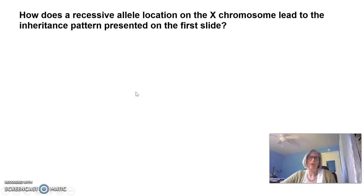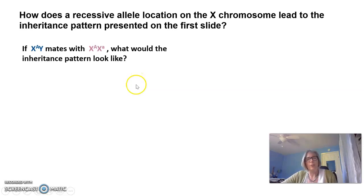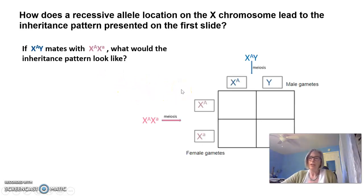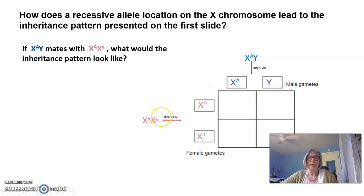How does a recessive allele located on the X chromosome lead to the inheritance pattern presented? Let's do an example. If an X uppercase A Y male mates with a heterozygous female, what would the inheritance pattern look like? Let's do a Punnett square. The male's X big A and Y go through meiosis — some sperm have the X with the dominant allele, some have the Y. The female produces eggs, some with the dominant allele on X, some with the recessive allele.